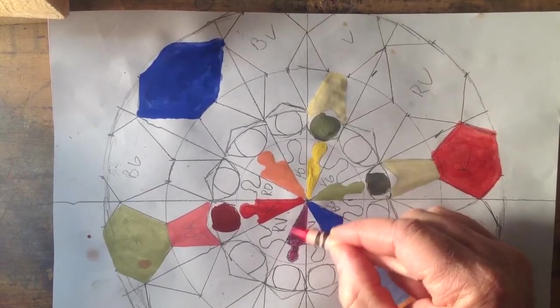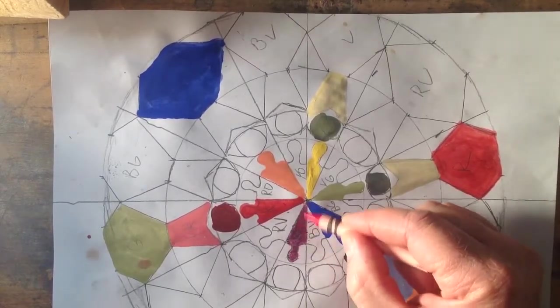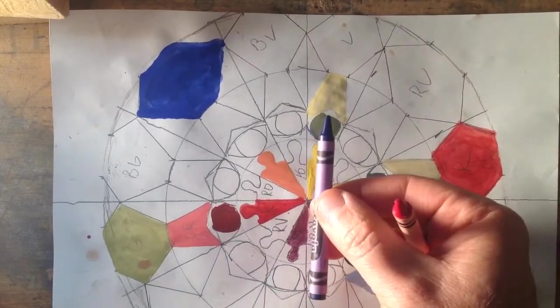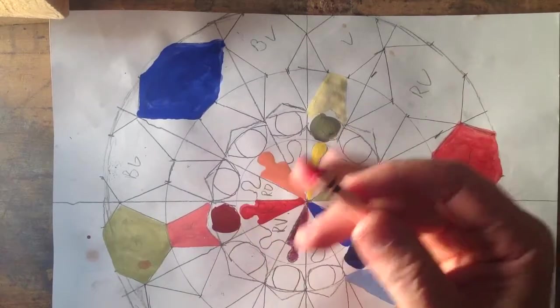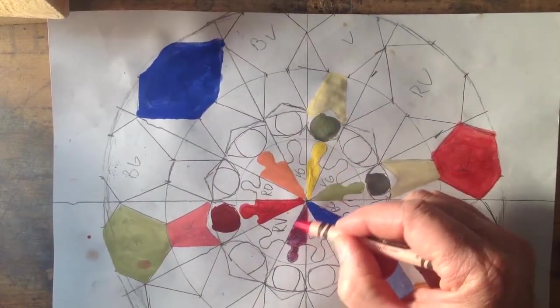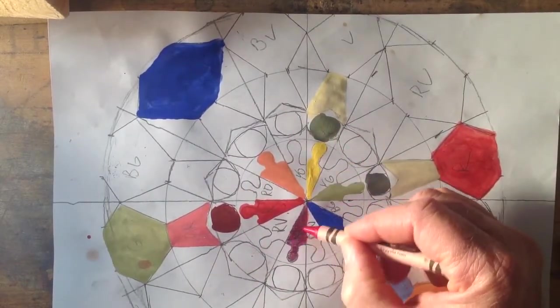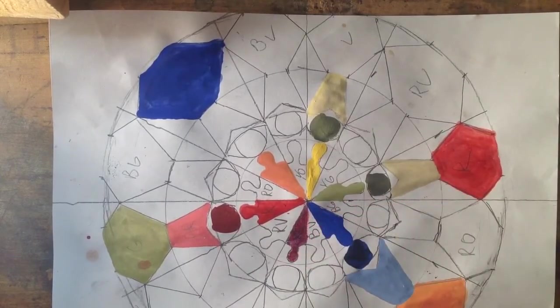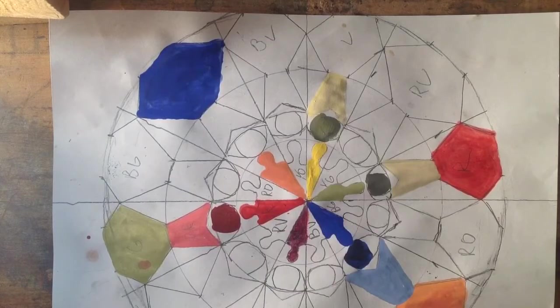With this section right here, it's the violet section, so I took a red and a blue crayon and I'm mixing those together. I'm trying to get the wax to mix to give me the violet color that I'm looking for. You can see it's going to look quite a bit different than the paint, but that's alright.